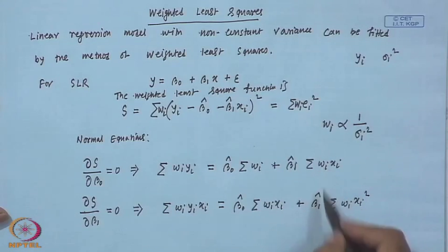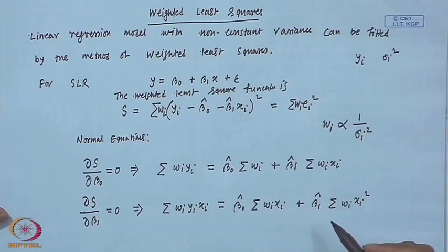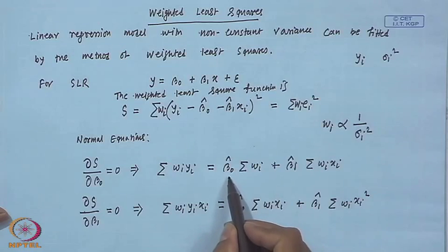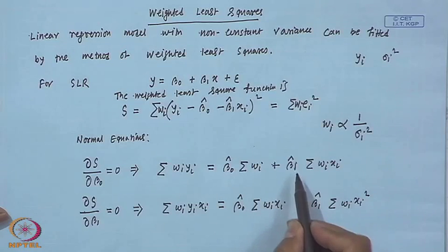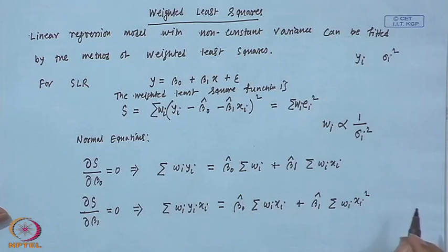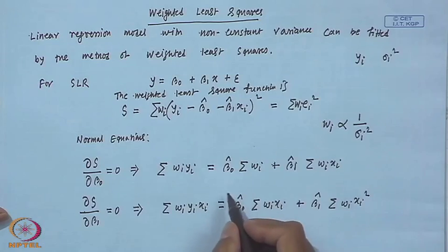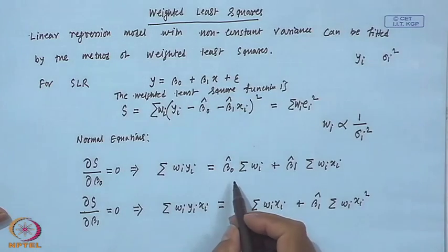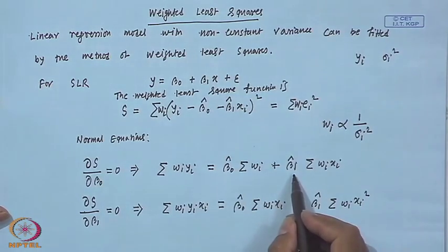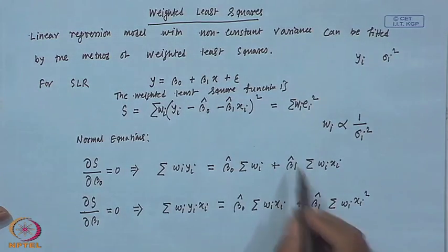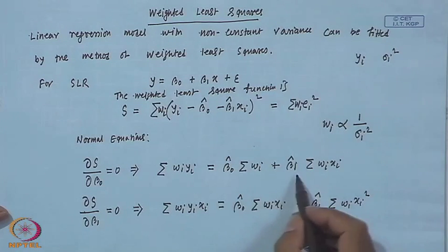You have two normal equations and two unknowns, β₀ and β₁. By solving these two equations, you will get an estimate of the regression coefficients β̂₀ and β̂₁.